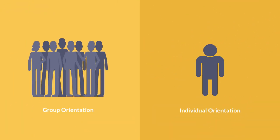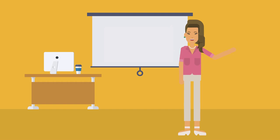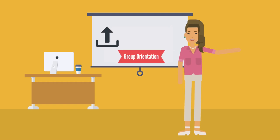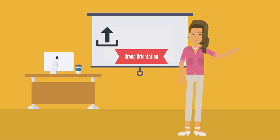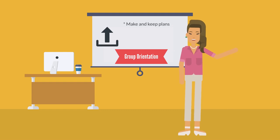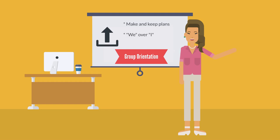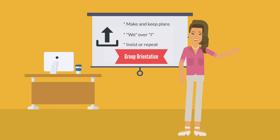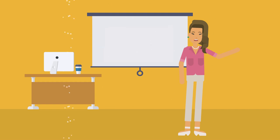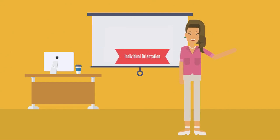One way to think about politeness orientation within a language you are studying is to think about group and individual orientation. If a speaker in the language has a high group orientation, he or she would likely emphasize making and keeping plans, use more plural pronouns like "we" relative to singular pronouns like "I," and emphasize sincerity through repetition.